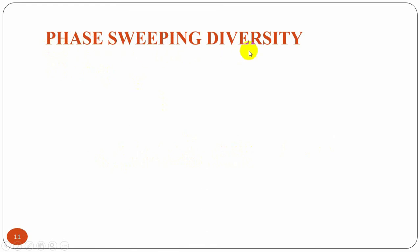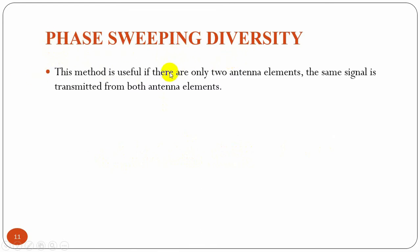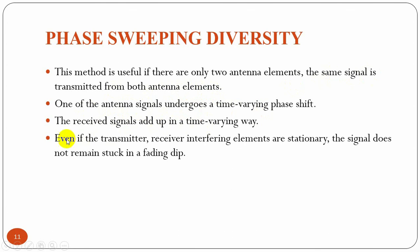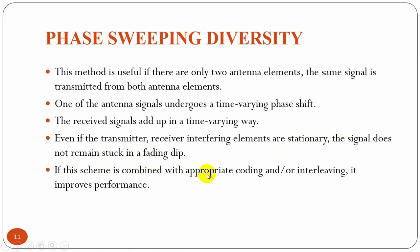In phase sweeping diversity, this method is useful if there are only two antenna elements. In that case, the same signal is transmitted from both antenna elements, but one of the antenna signals undergoes a time-varying phase shift. The received signals then add up in a time-varying way. Even if the transmitter and receiver elements are stationary, the signal does not remain stuck due to fading. If the scheme is combined with appropriate coding or interleaving, it improves the overall performance.